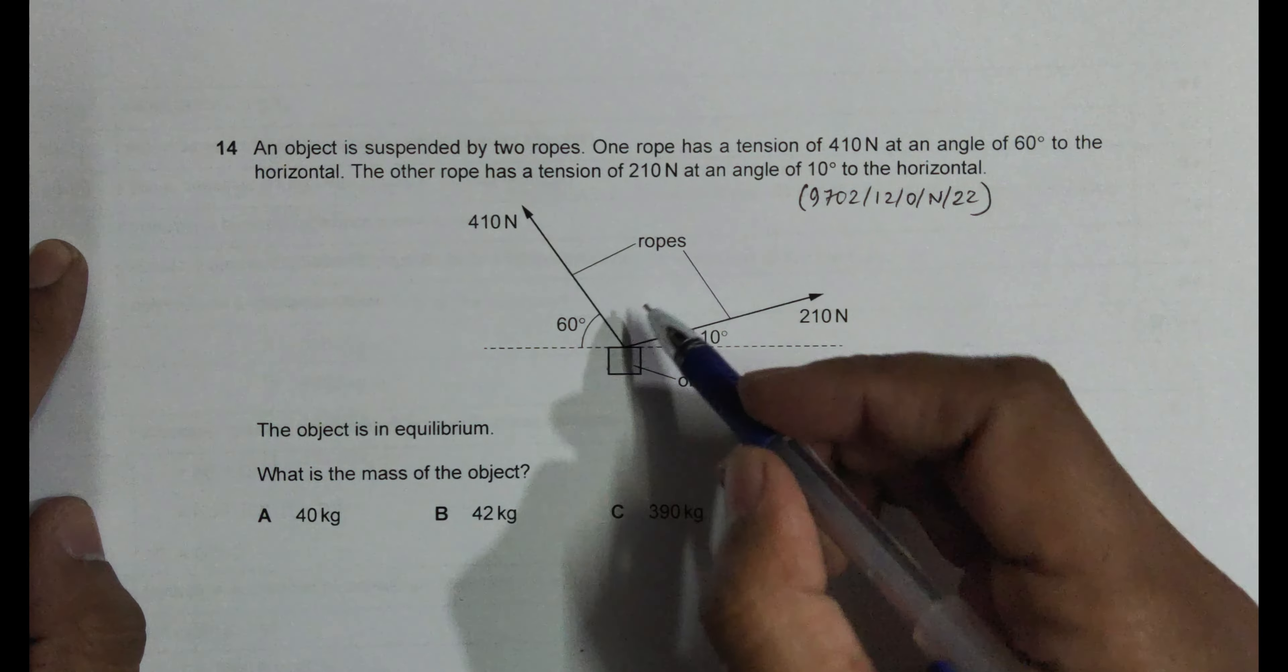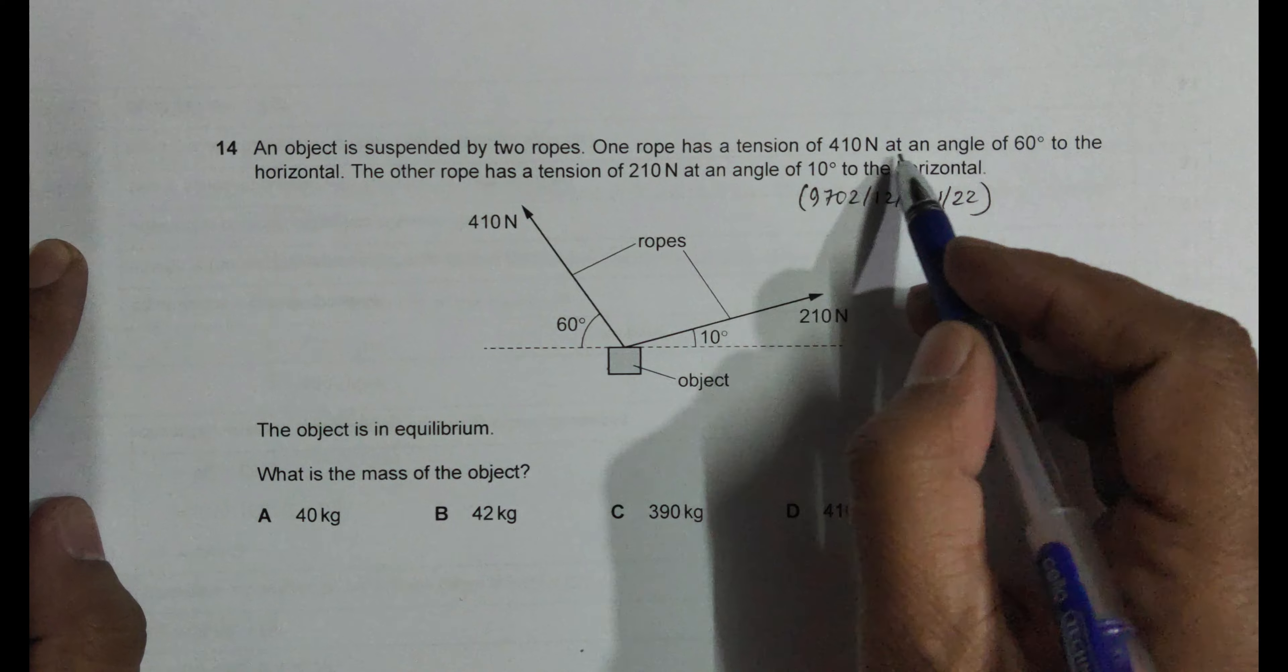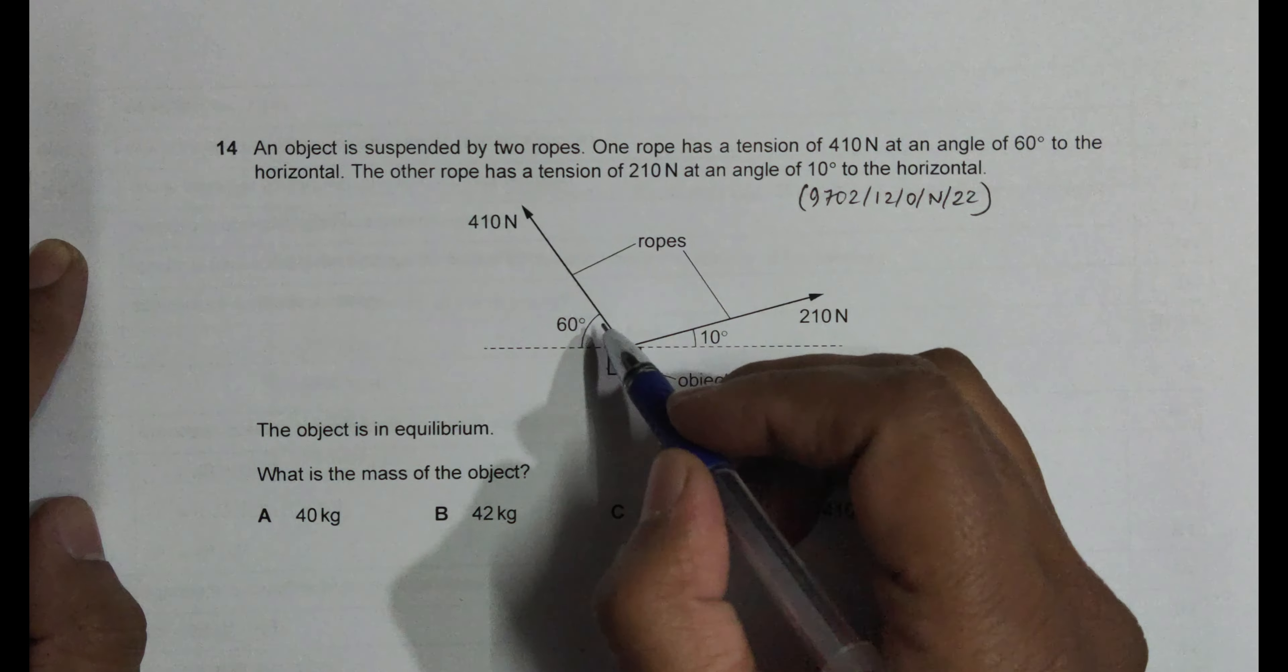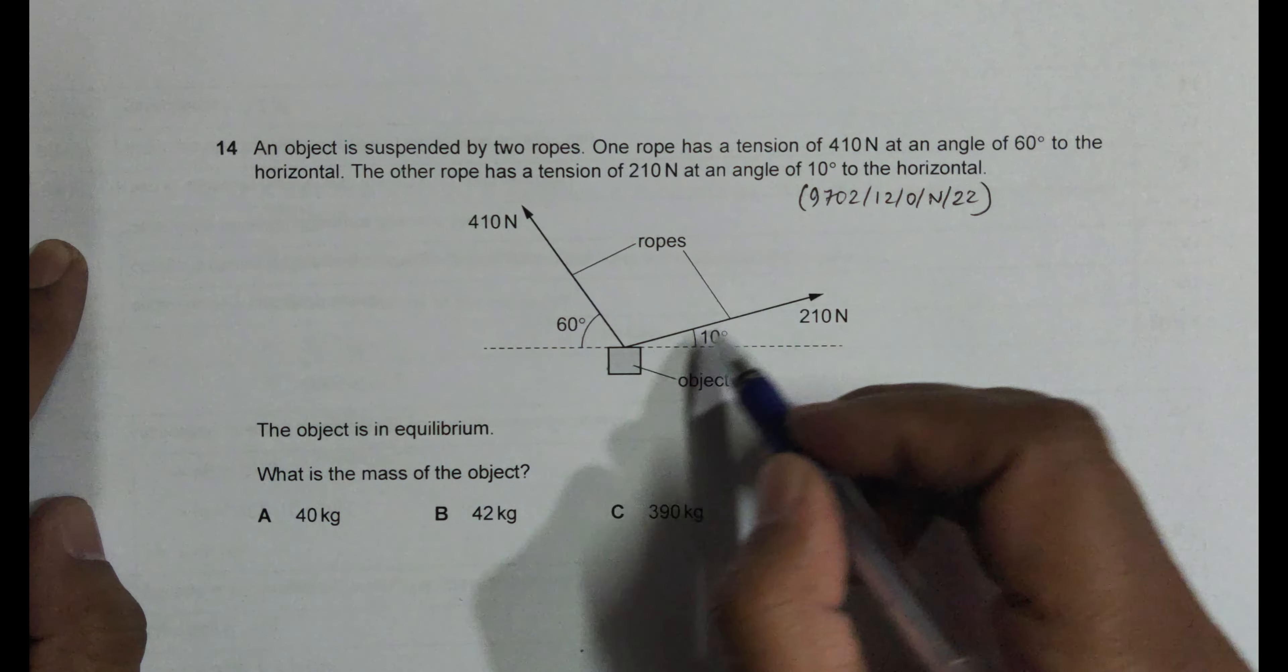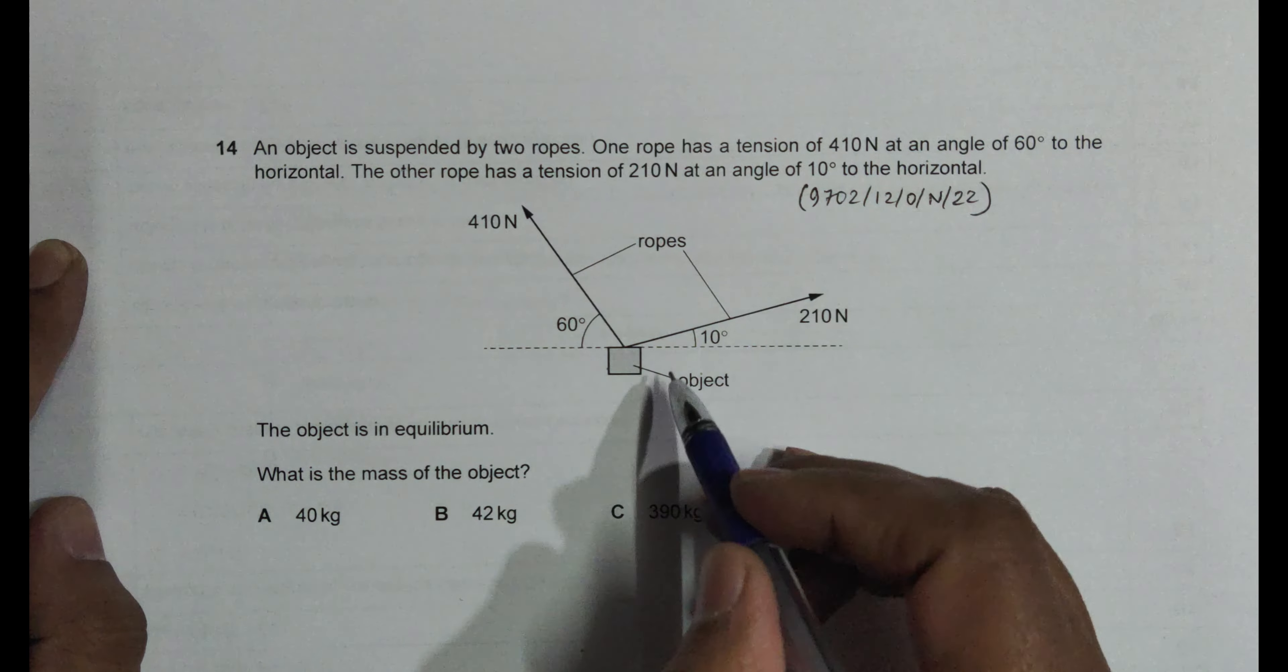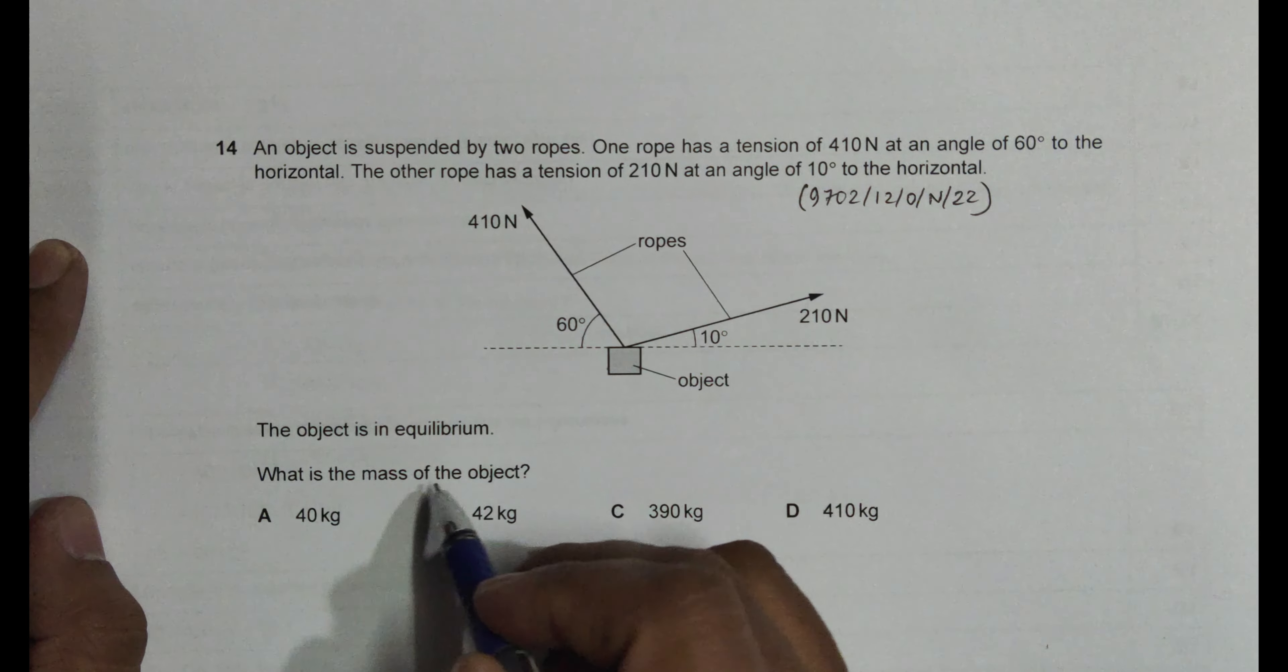An object is suspended by two ropes, so one rope here, one rope here. One rope has a tension of 410 newton at an angle of 60 degrees to the horizontal. The other rope has a tension of 210 newton at an angle of 10 degrees to the horizontal. The object is in equilibrium. What's the mass of the object?